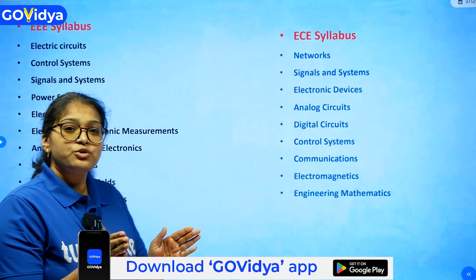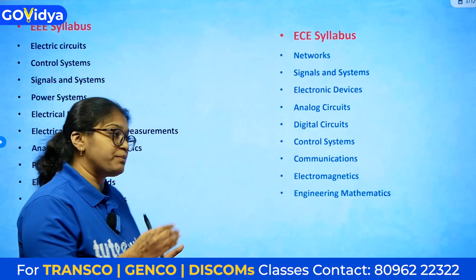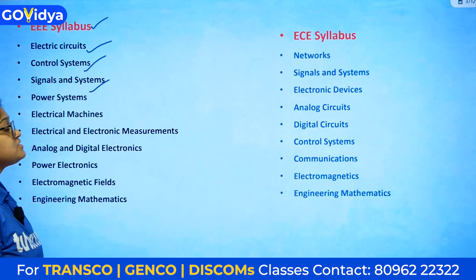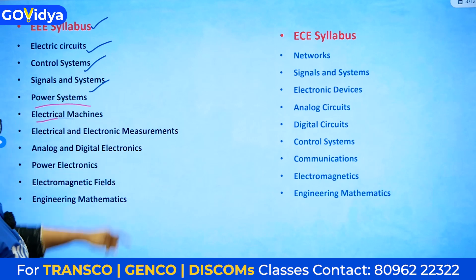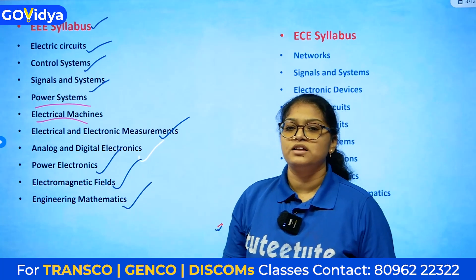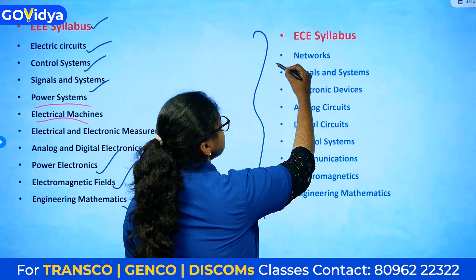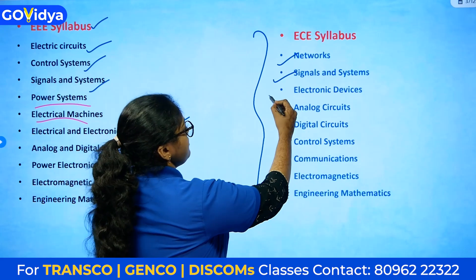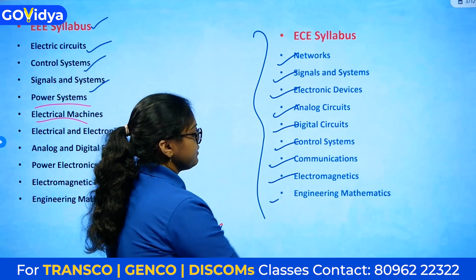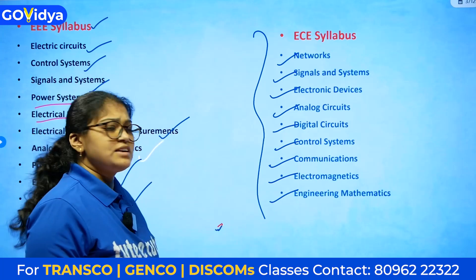You also need to know the syllabus and how many subjects are involved. For EEE the subjects are: Electric Circuits, Control Systems, Signals and Systems, Power Systems, Electrical Machines, Measurements, Analog and Digital Electronics, and Power Electronics. For ECE the syllabus includes: Networks, Signals and Systems, Electronic Devices, Analog Circuits, Digital Circuits, Control Systems, Communications, EMF, and Engineering Mathematics.